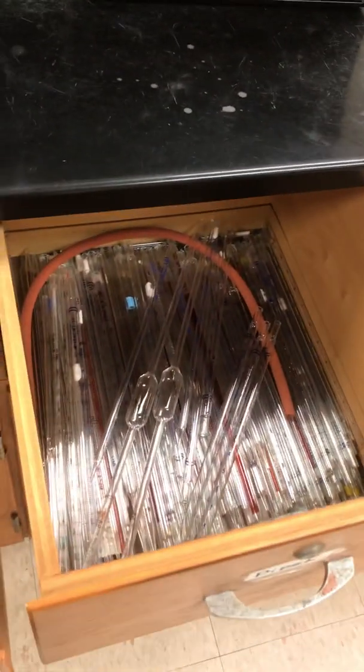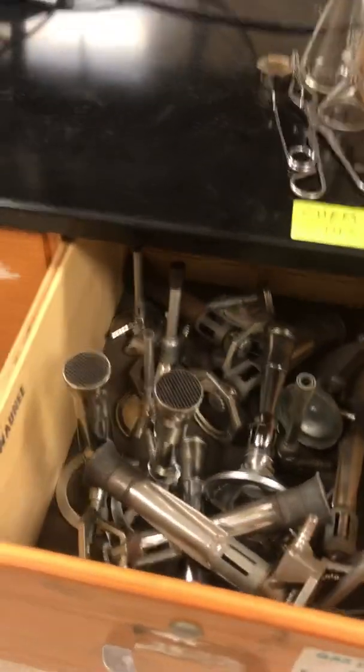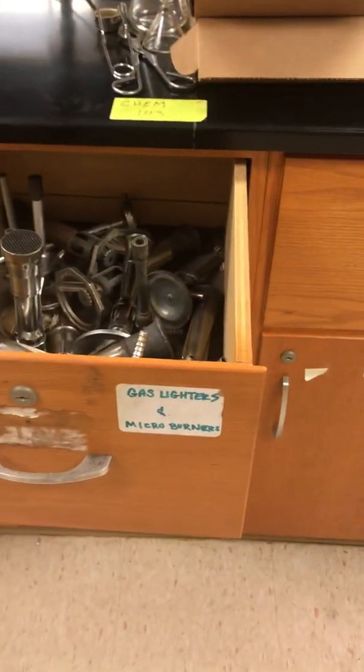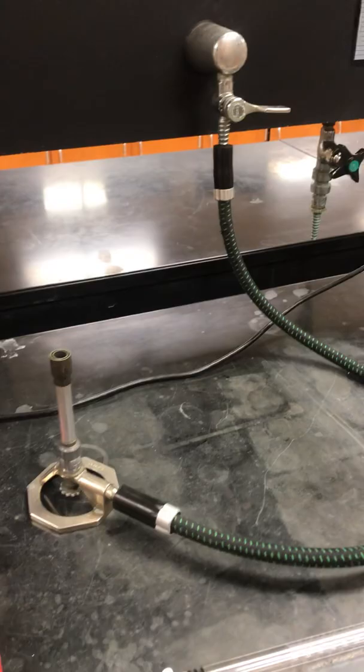In terms of your pipette ball and your pipette, the drawers are labeled pipette ball and pipette where you will obtain those. Also, you're going to have other drawers labeled gas lighters and Bunsen burner hoses.